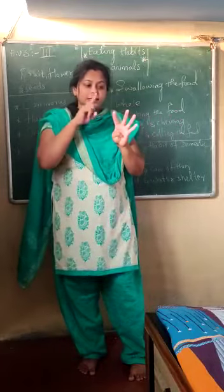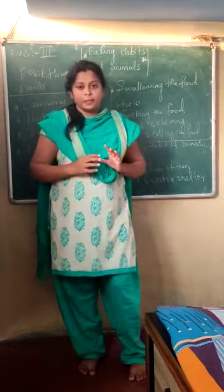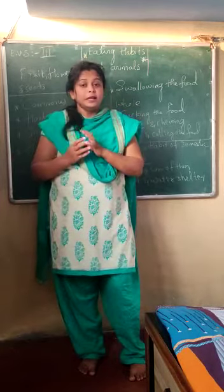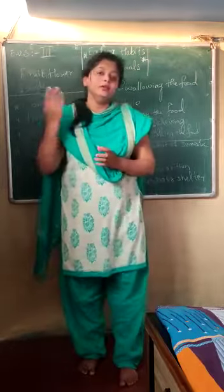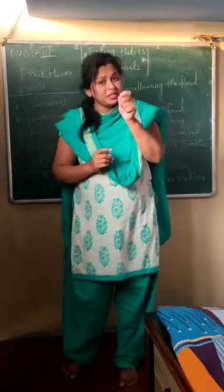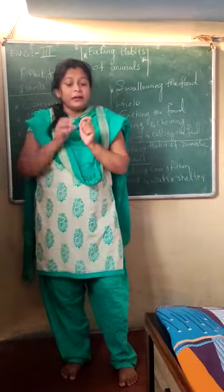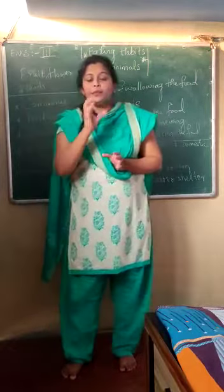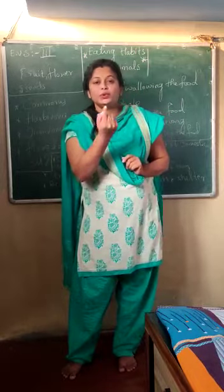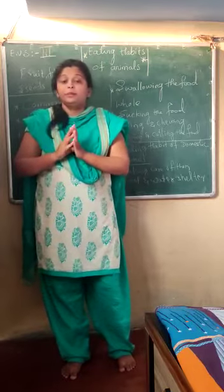Jowar is a seed, wheat is a seed, mustard is a seed, almond is a seed. All dry fruits that we get are seeds. Even coconut is a seed. Seeds are useful for oils, dry fruits, some vegetable parts, some fruit parts — seeds are helpful for the human body and other animals too. Every small seed, whether it is a mustard seed or a groundnut seed, has a small plant hidden inside it.